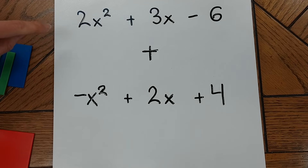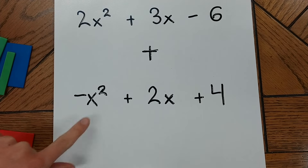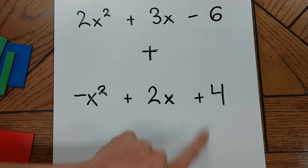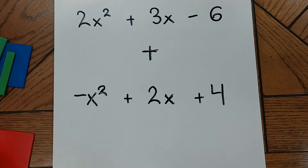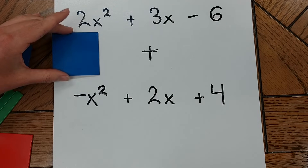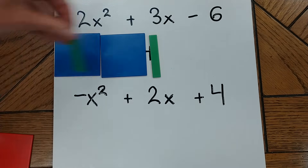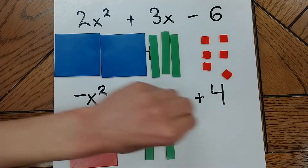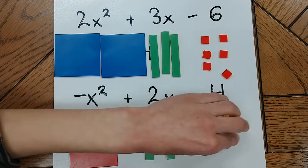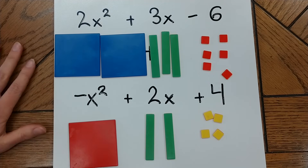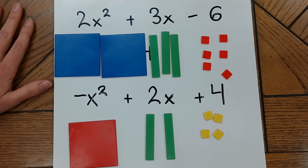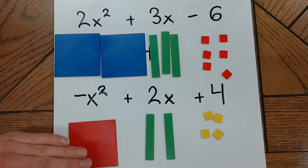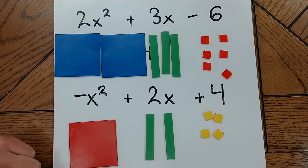Let's say we have two polynomials: 2x squared plus 3x minus 6, and negative x squared plus 2x plus 4, and we want to add them together. We're going to start out by modeling each of these polynomials with our algebra tiles. With algebra tiles, combining like terms is the same thing as combining like tiles. So to add these two together, all I need to do is put tiles of the same type together and cancel out any positive-negative pairs.